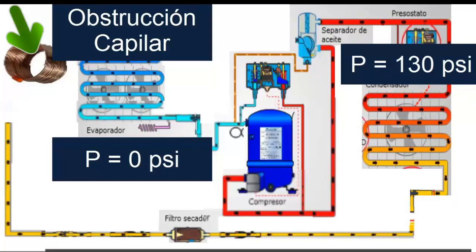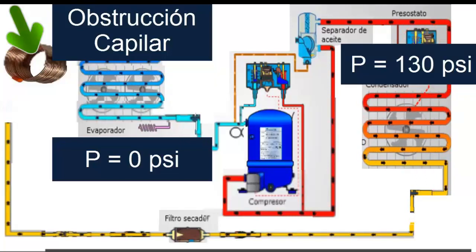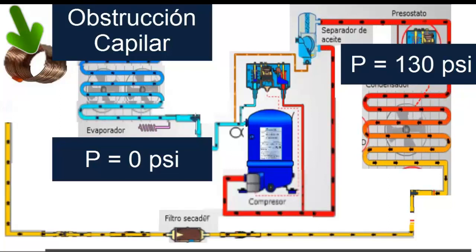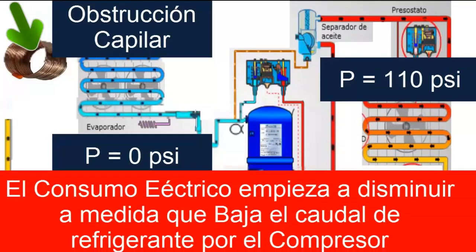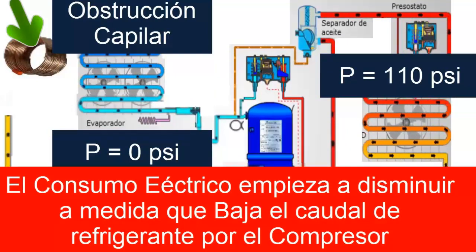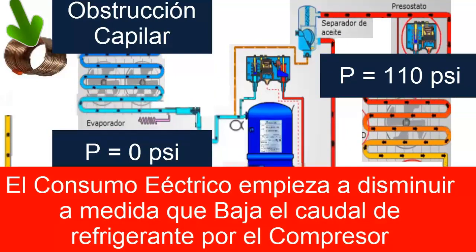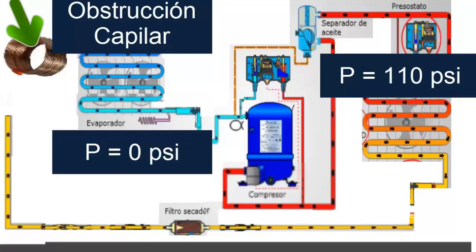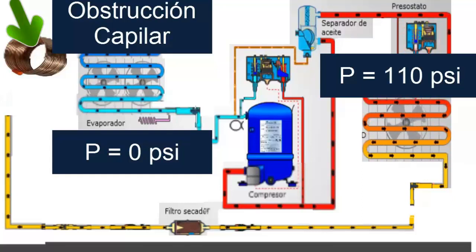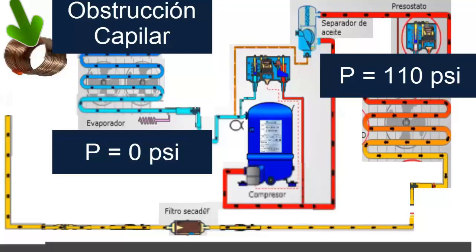That is the behavior of a system when it suffers an obstruction. When it suffers an obstruction, the low pressure decreases, the high pressure has a peak, then it begins to decrease, and the compressor's amperage consumption always begins to decrease. Depending on where the obstruction occurs, it is very likely that at the exit of the capillary tube, if the obstruction was in the capillary, we have freezing signals at the exit of the capillary — this is also a sign that there was an obstruction at this point. In addition, the condenser begins to lose temperature, and the condenser, which is usually about 10 to 15 degrees above the ambient temperature, is becoming more and more similar to the ambient temperature value.